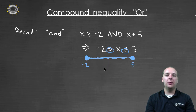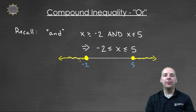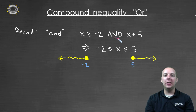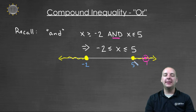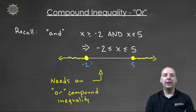Now let's suppose we didn't want to graph the points on the inside of negative two and five, but instead the x's outside the middle — to the left end and to the right end. Notice that you cannot use an AND inequality anymore. For example, try a point like seven. Seven might be greater than five, but seven is not at the same time less than negative two. You can't be at two places at once. Because these are on the outside, an AND inequality is not going to work. So this needs to be an OR compound inequality.